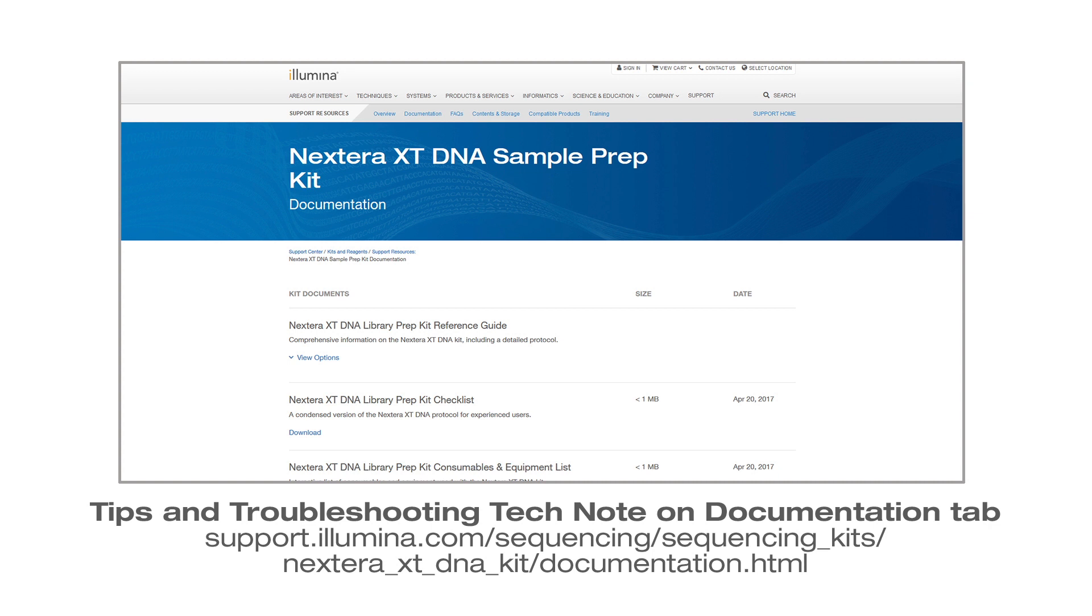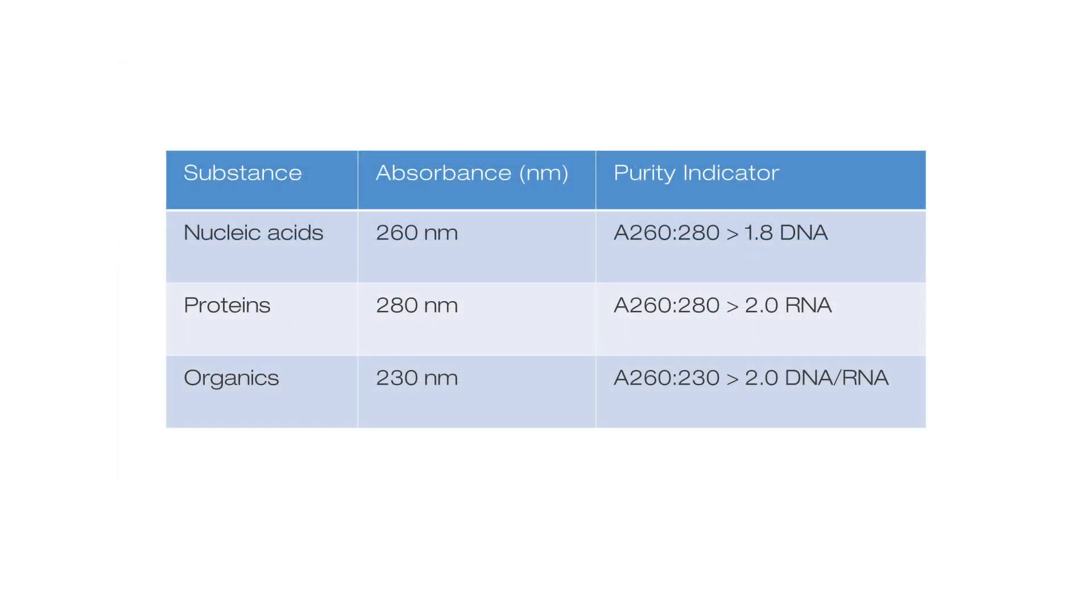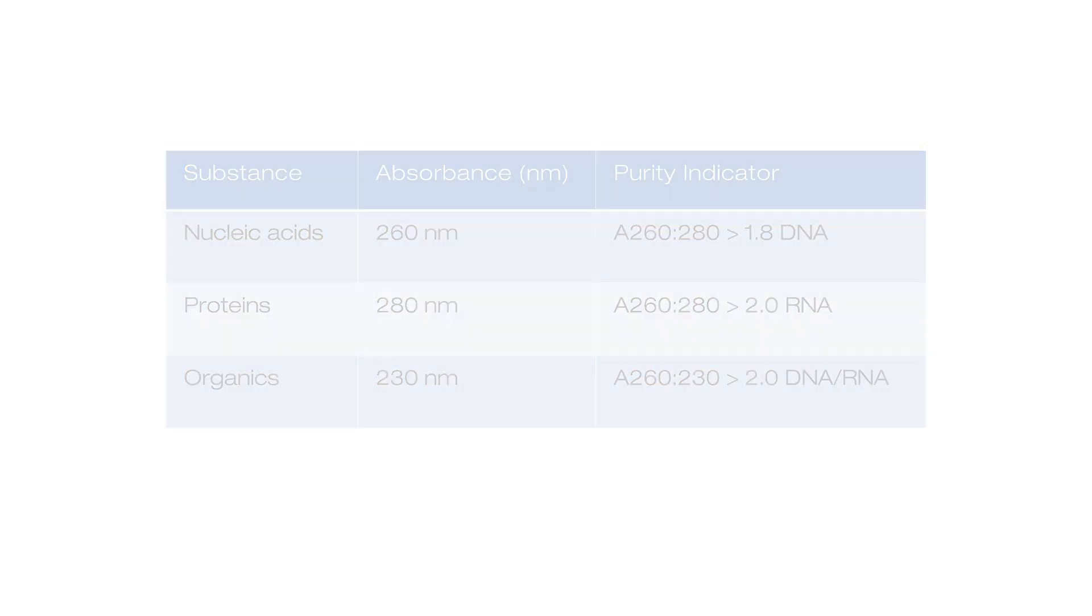If you suspect contaminants in your DNA sample, we recommend using UV absorbance as a purity indicator. An absorbance reading of greater than 1.8 at the 260 to 280 angstrom ratio indicates high quality DNA. A reading of greater than 2.0 at 280 and 230 angstroms is a good indicator of a sample that is free of proteins and organics respectively. If needed, additional purification steps or filtration can help remove contaminants.